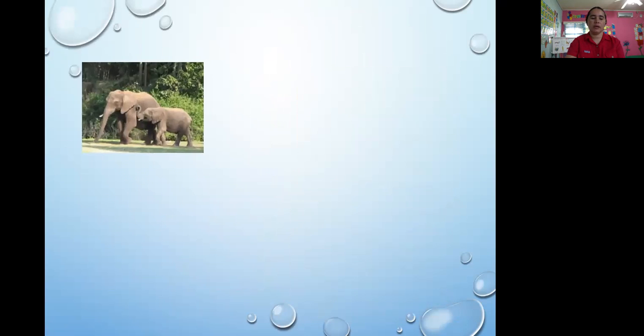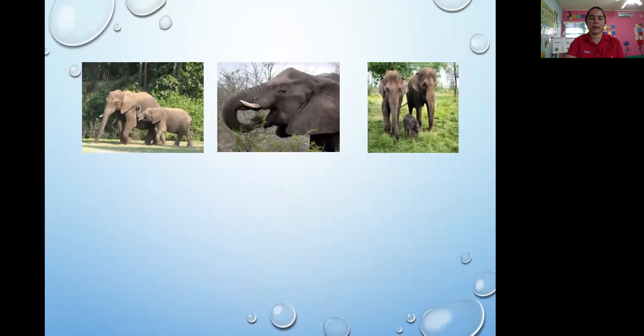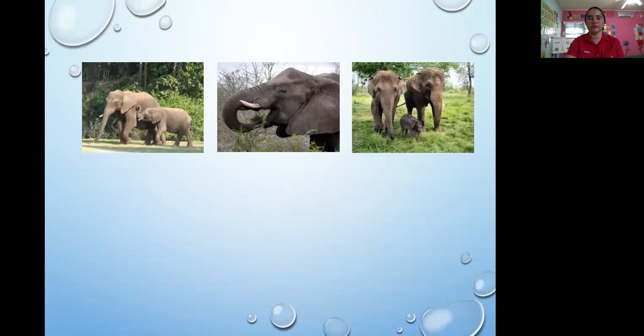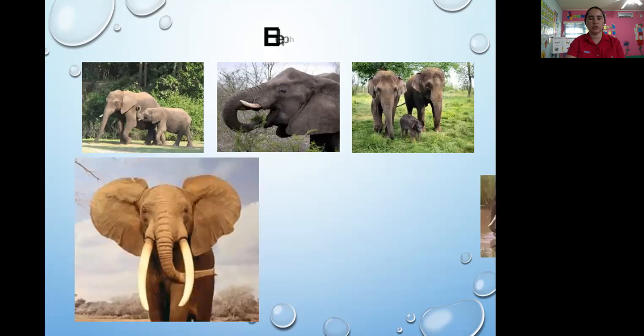We have here elephants. What elephants eat? Well, they eat grass. They eat small plants. They eat bush. They eat fruit. And their favorite food is the tree bark. They eat that and they eat roots too.